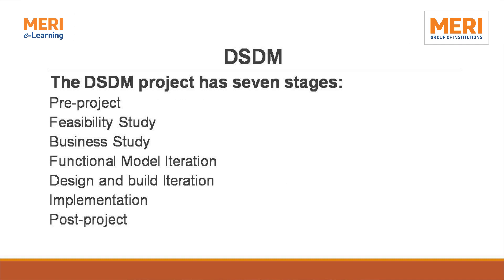DSDM projects have seven stages: number one, pre-project; second, feasibility study; third, business study; fourth, functional model iteration; fifth, design and build iteration; sixth, implementation; and the last is post-project. We are required to fulfill all these types of stages.